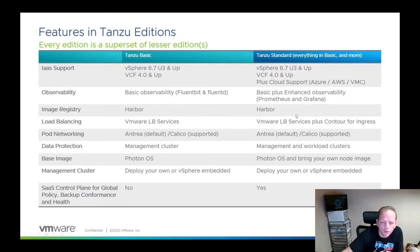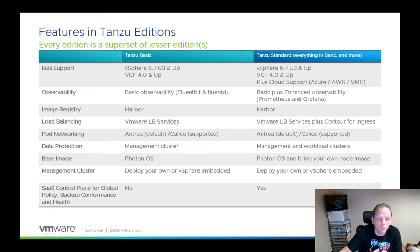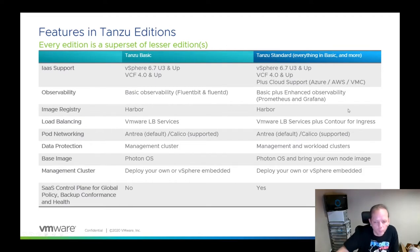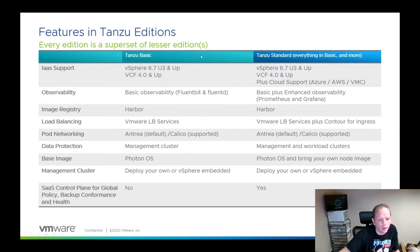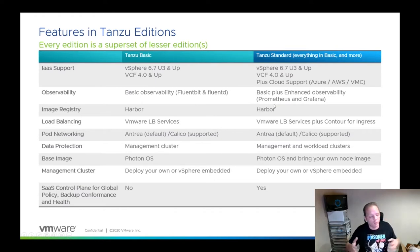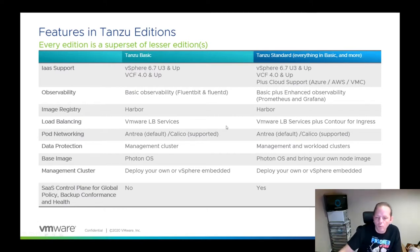As of right now, the Harbor service on vSphere 7 requires NSX-T, though that is intended to change in the very near future — it may have changed by the time you're watching this. The key point is you may see features with additional dependencies. For example, you might have NSX-T and Tanzu Basic and can use the Harbor service, or you might have Tanzu Standard but not NSX-T and therefore can't use it.